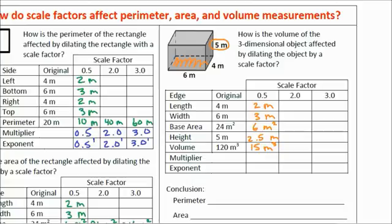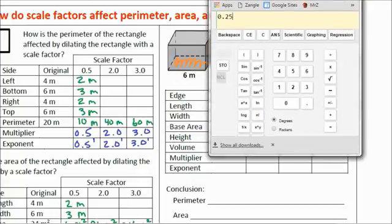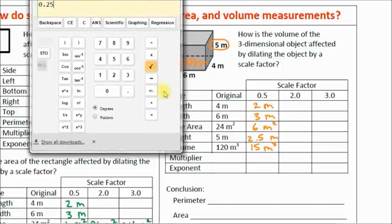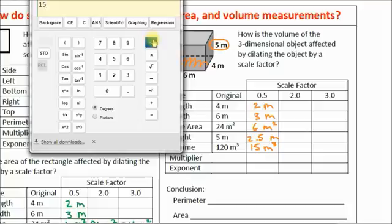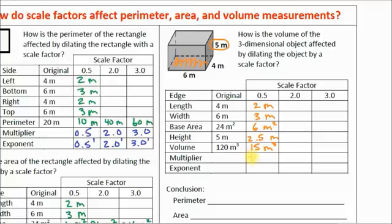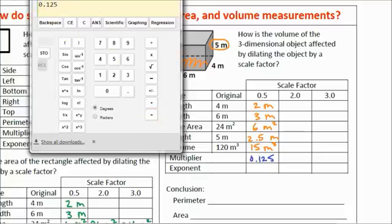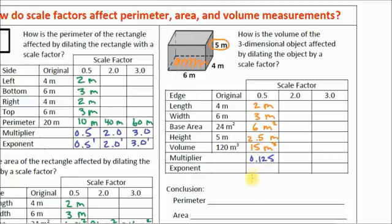What is our multiplier here? We take the new volume of 15 divided by the original volume of 120, and we get 0.125. Our multiplier is 0.125. Let's look at what happens when I take my scale factor of 0.5 and cube it — 0.5 to the third power equals 0.125. So in exponential form, the multiplier for volume can be written as the scale factor cubed.